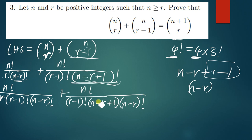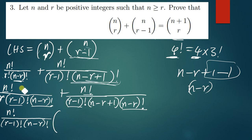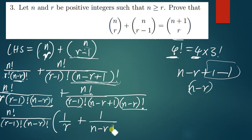From there, we look at what is common and factorize. We can see that n factorial is common in both terms, and r minus one factorial is also common, and n minus r factorial is also common. So we write those outside, then open the brackets. The remaining parts are: one over r, plus one over n minus r plus one.